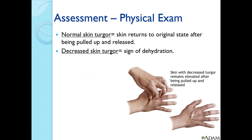Here's a picture of skin turgor. This tells us about the hydration status of the skin. When you pinch the skin — as shown here on the top of the hand — if the skin returns to the original state quickly after being pulled up and released, that tells me that's normal skin turgor and the skin is well hydrated. But if you pinch the skin and it stays elevated, kind of tented, that tells me they have decreased skin turgor, which is a sign of dehydration, meaning they are lacking the fluid they need and the skin is at risk for injury.